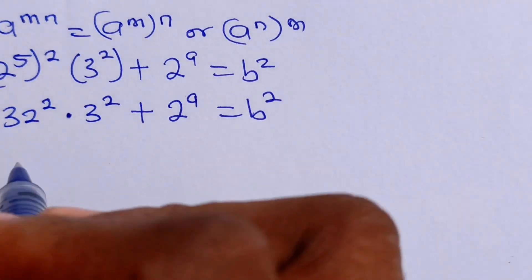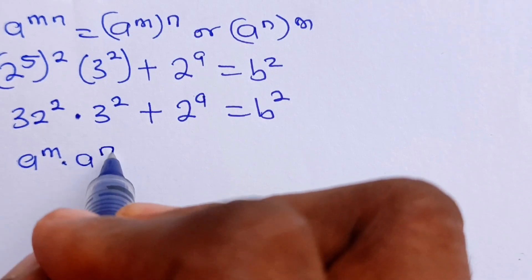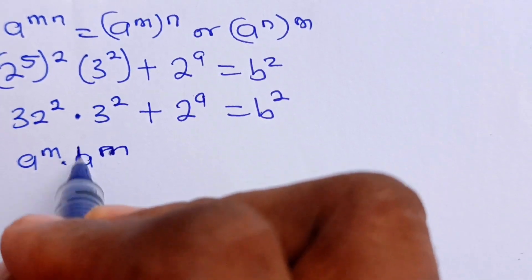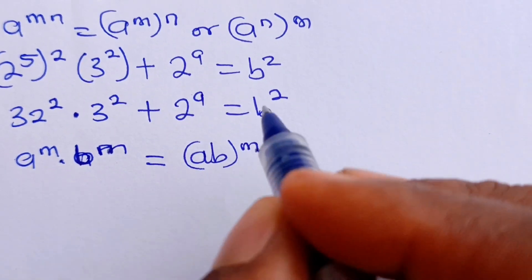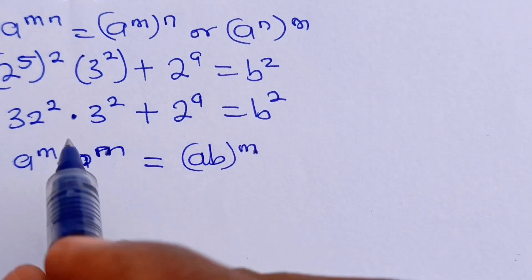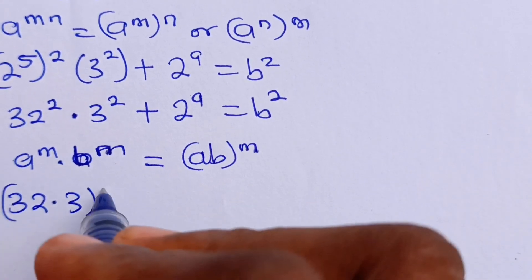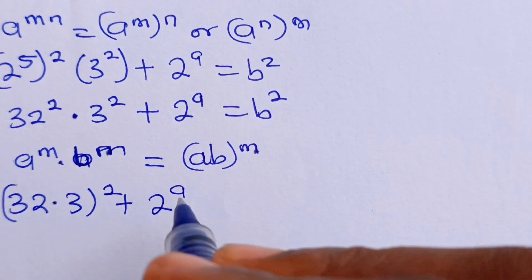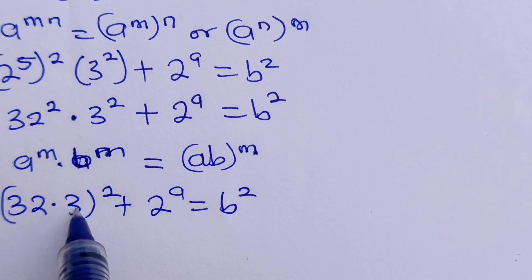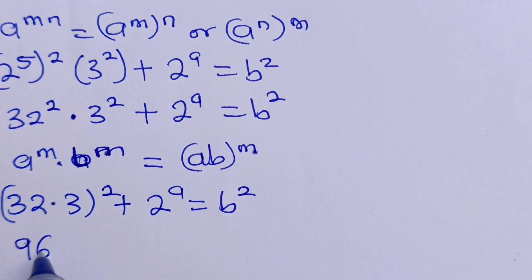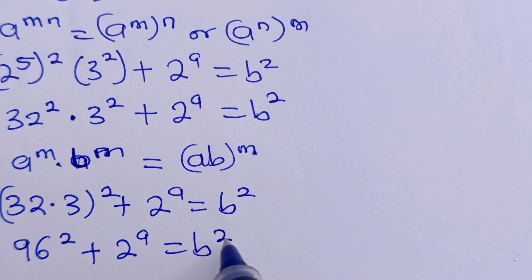Now, remember that A to the power of M multiplied by B to the power of M is equal to A multiplied by B raised to the power of M, once they share the same power. That means we can write this as 32 multiplied by 3, all squared, plus 2 to the power of A is equal to B squared. Now, 32 multiplied by 3 will give us 96. So we have 96 squared plus 2 to the power of A is equal to B squared.